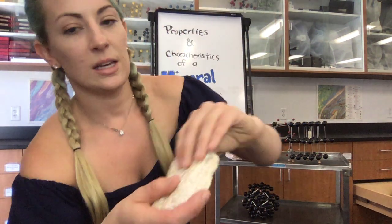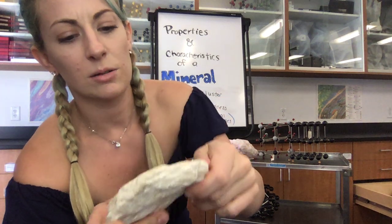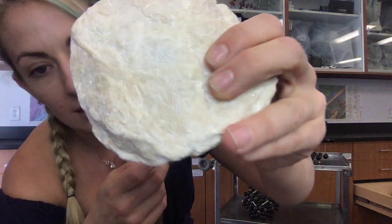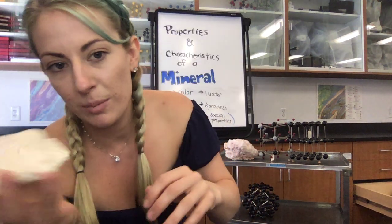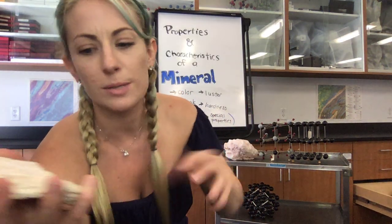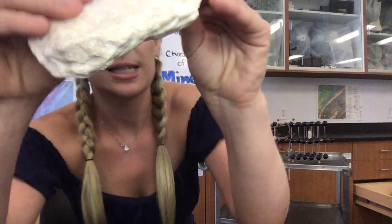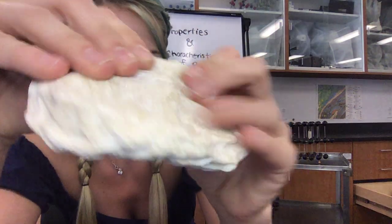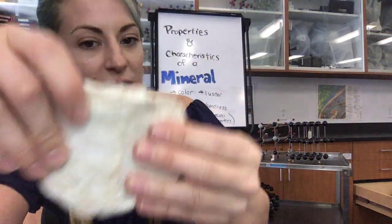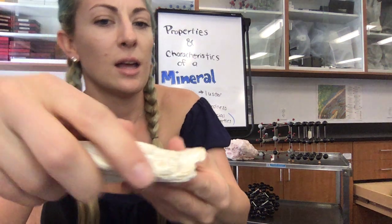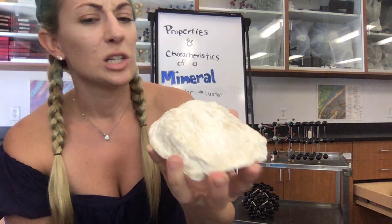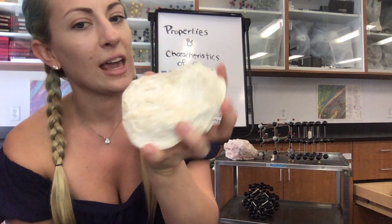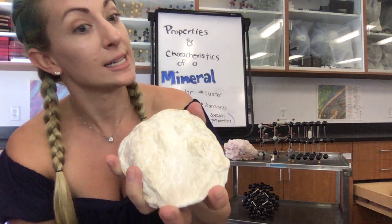Another type of luster is soapy, waxy, or resinous. This piece here is talc — what gets crushed up and put into powders and make-ups. If I were to rub it, it feels almost slippery or soapy. It has a little bit of light bouncing off of it, making it kind of shiny. So we would call this a waxy or resinous luster.